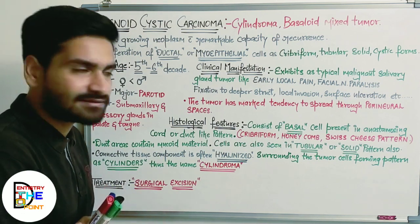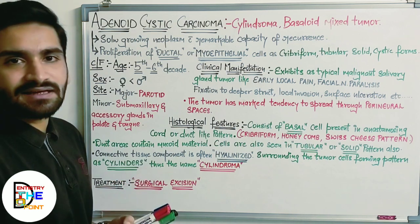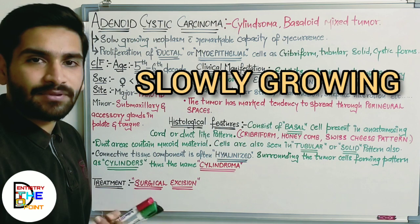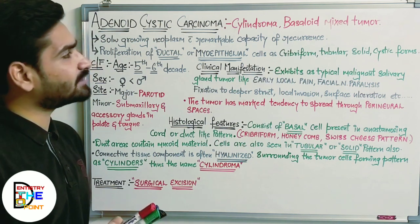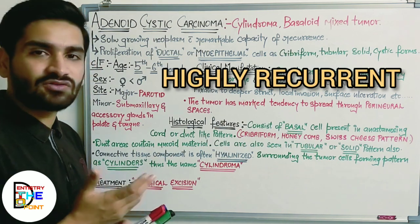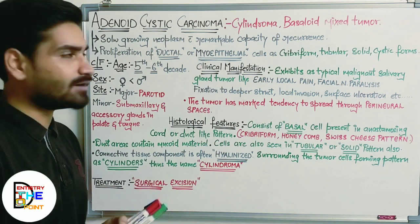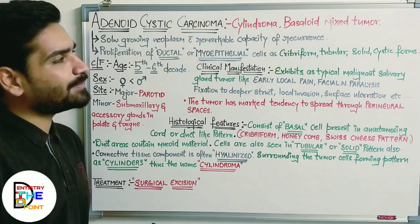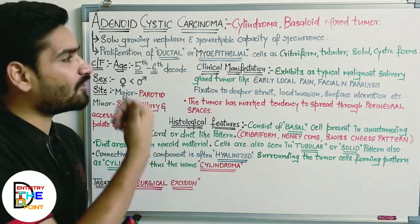Adenoid cystic carcinoma is a slowly growing tumor. It is not going to grow rapidly or within a short span of time — it is going to take years. It has a remarkable capacity for recurrence; the chances of recurrence of this tumor are very much higher compared to other tumors.